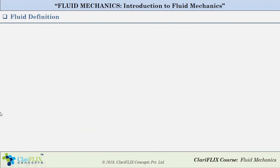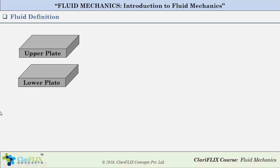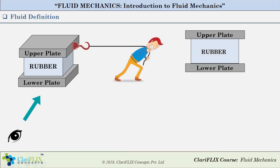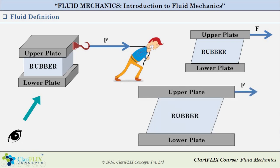Say for instance, we have two flat plates — an upper plate and a lower plate. We have a solid matter, say a rubber, which is tightly held between these two plates. Looking from the front, we observe this arrangement. Now, keeping the lower plate stationary, let us apply a force F of a certain specific magnitude to the upper plate in the horizontal direction. Due to this horizontal force, the rubber will start deforming and eventually acquire a new shape. The magnitude of deformation can be measured by an angle, say beta.